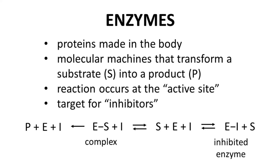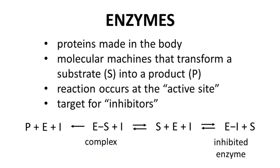Below is a general enzymatic scheme. Toward the middle, we have the substrate, enzyme, and inhibitor. If the enzyme binds a substrate, you get an enzyme-substrate complex that rapidly forms the product. If, however, the enzyme instead binds the inhibitor, you get an enzyme-inhibitor complex, which is not able to bind the substrate to make product. Other modes of inhibition are possible, but this scheme applies to most enzyme-inhibitor drugs.